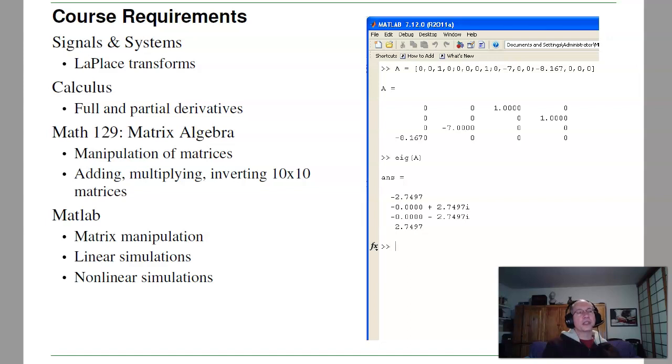In terms of course requirements, what you'll need in this class is signals and systems, because we use Laplace transforms fairly extensively. Calculus, for taking full and partial derivatives. That's when we do the Euler-Lagrange equations and Lagrangians. As well as Math 129 matrix algebra. We'll be doing extensive manipulation of matrices in this class, and likewise we'll be using what you learned in Math 129.